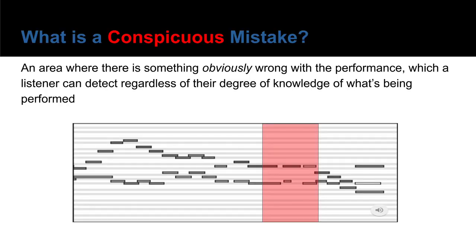With this idea in mind, let's take an example which sounds like a typical piano practice. Even as most of you might not know this snippet, you were probably still able to hear the mistake indicated by the red area, which is an example of a hesitation in playing.